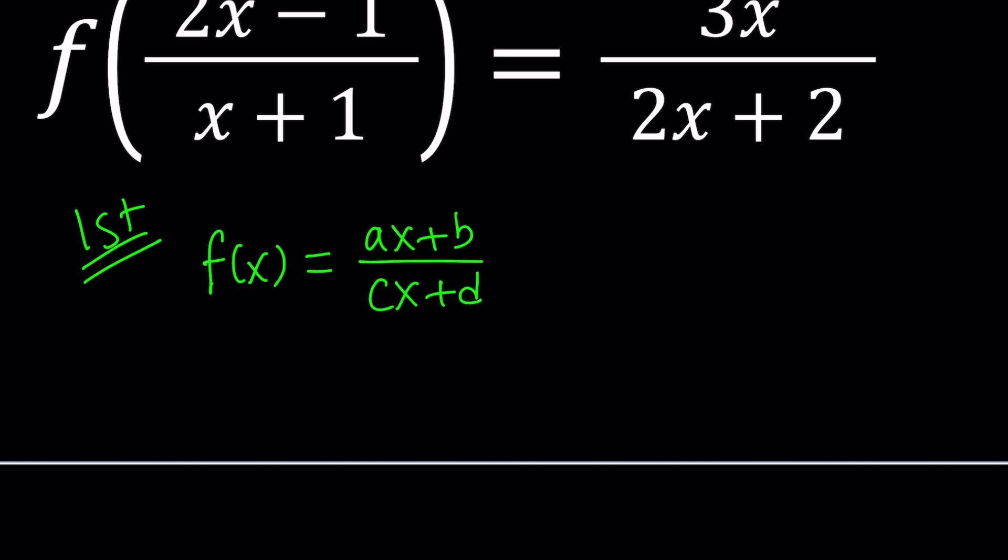We can write it as ax plus b divided by cx plus d, where a, b, c, d are constants. And some of them can be 0, that's perfectly fine. So here's what we're going to do next. We're going to use this form to evaluate this. We're going to replace x with this whole thing right here, and then that's going to give us the right-hand side.